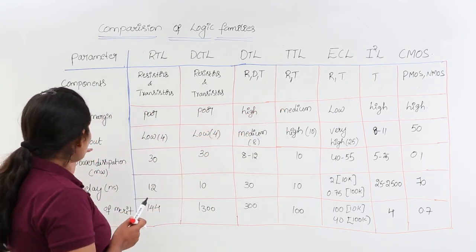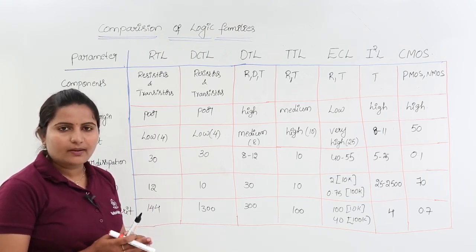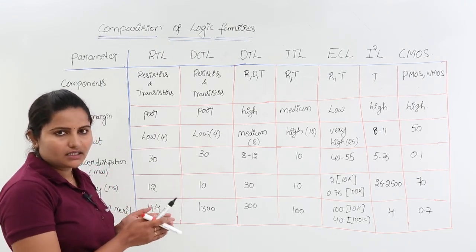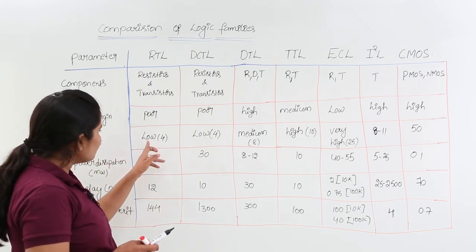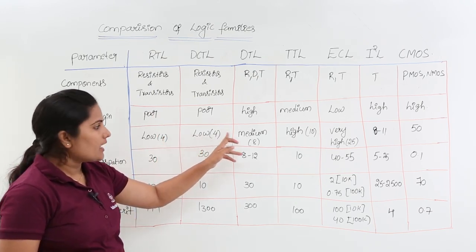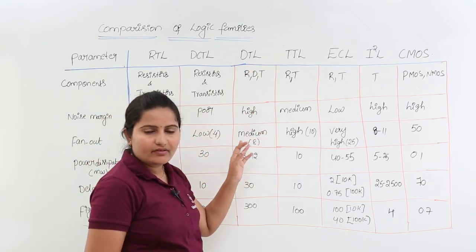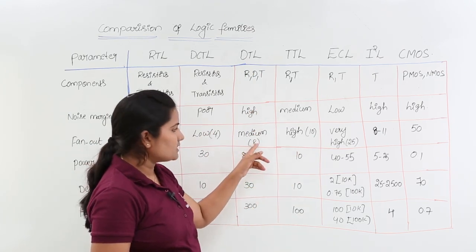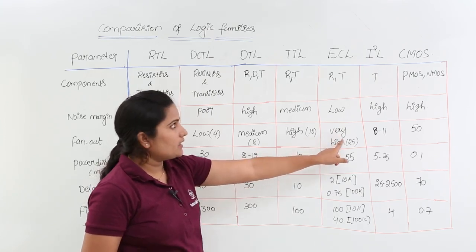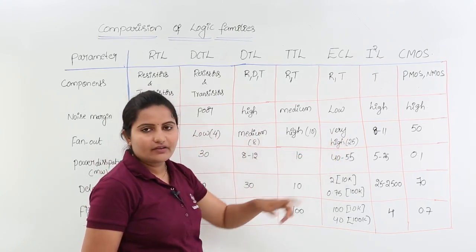Coming to fan-out — the number of gates that a gate can drive in a circuit — the fan-out is low for RTL at nearly 4 gates, also 4 for DCTL, medium for DTL at about 8 gates, high for TTL at nearly 10 gates, and very high for ECL compared to all other bipolar families at nearly 25 gates.